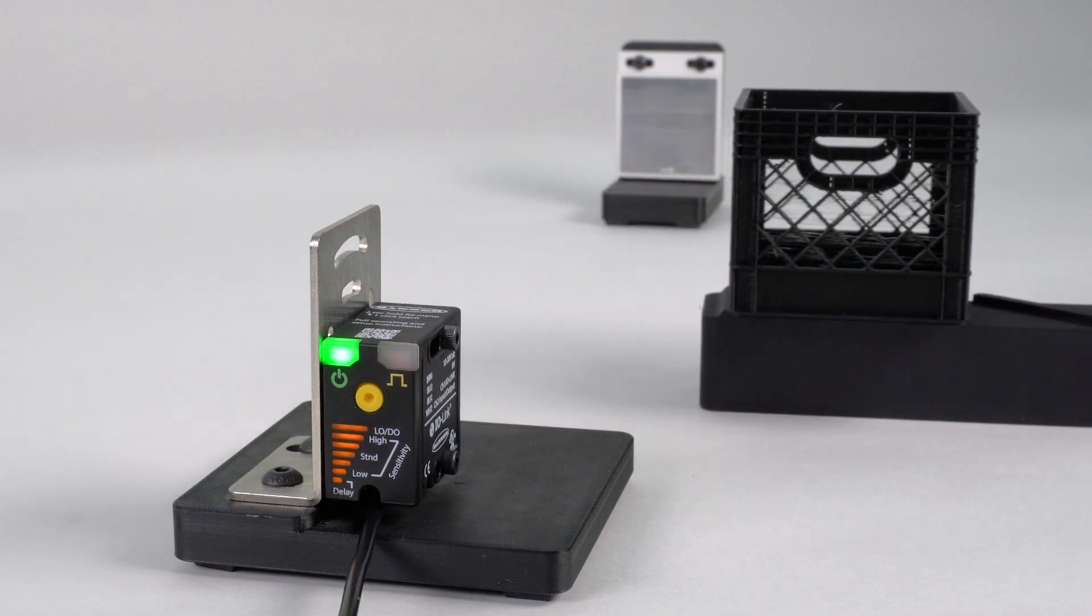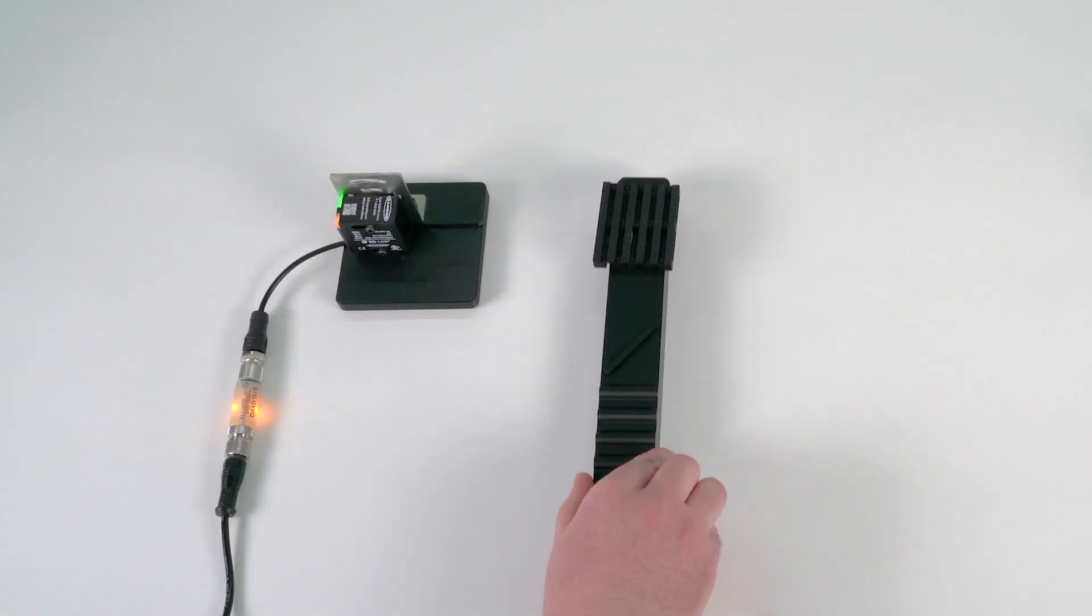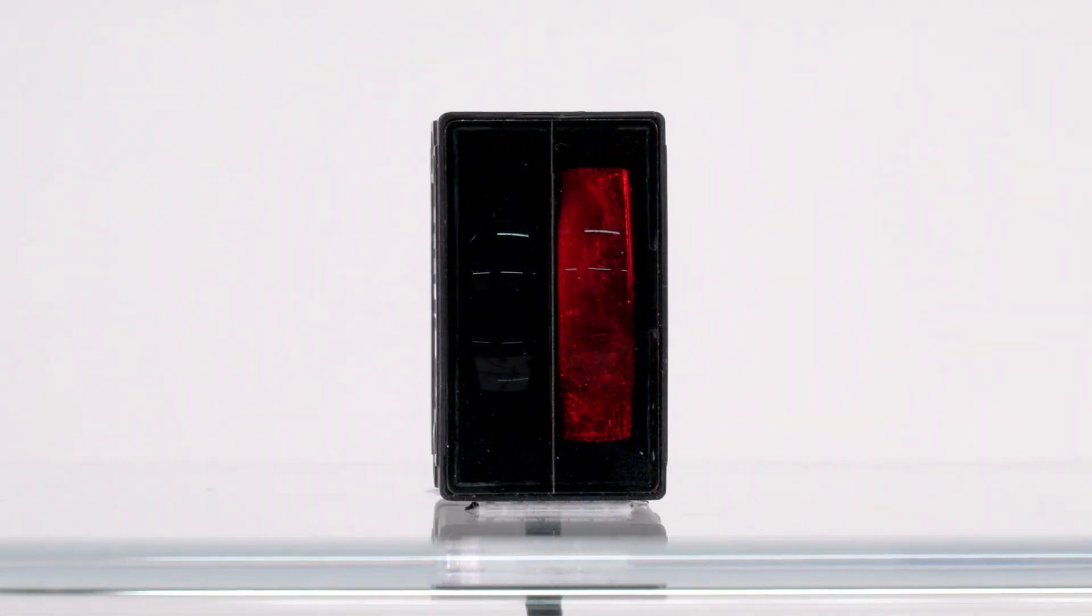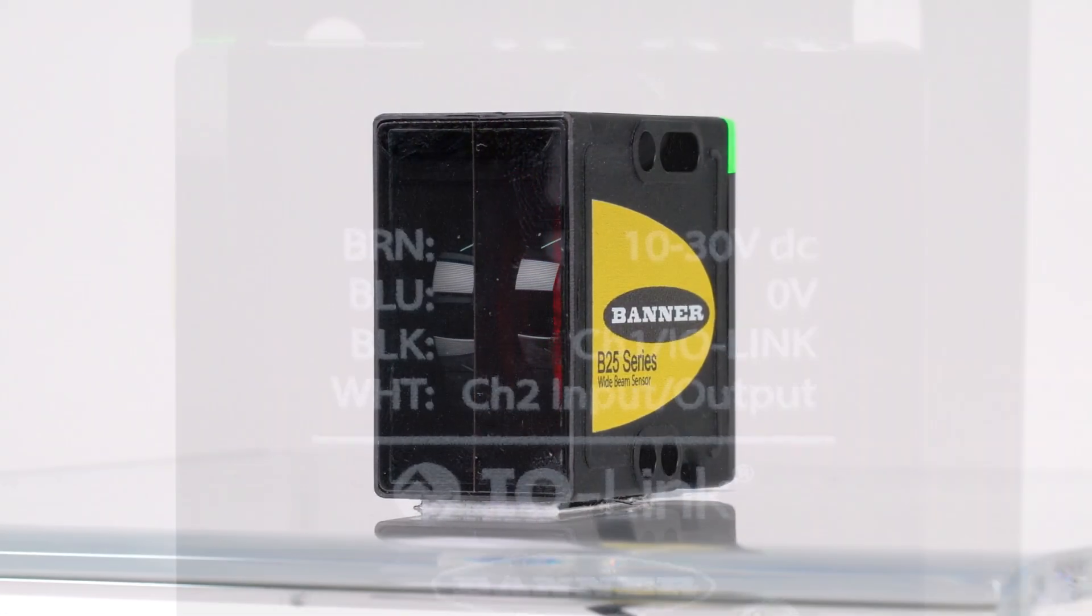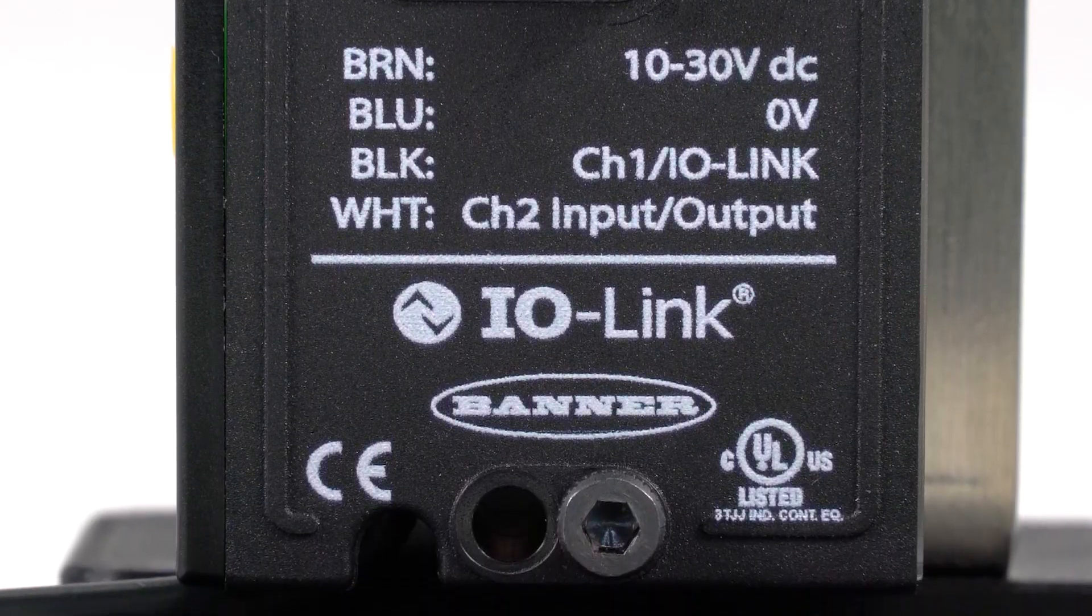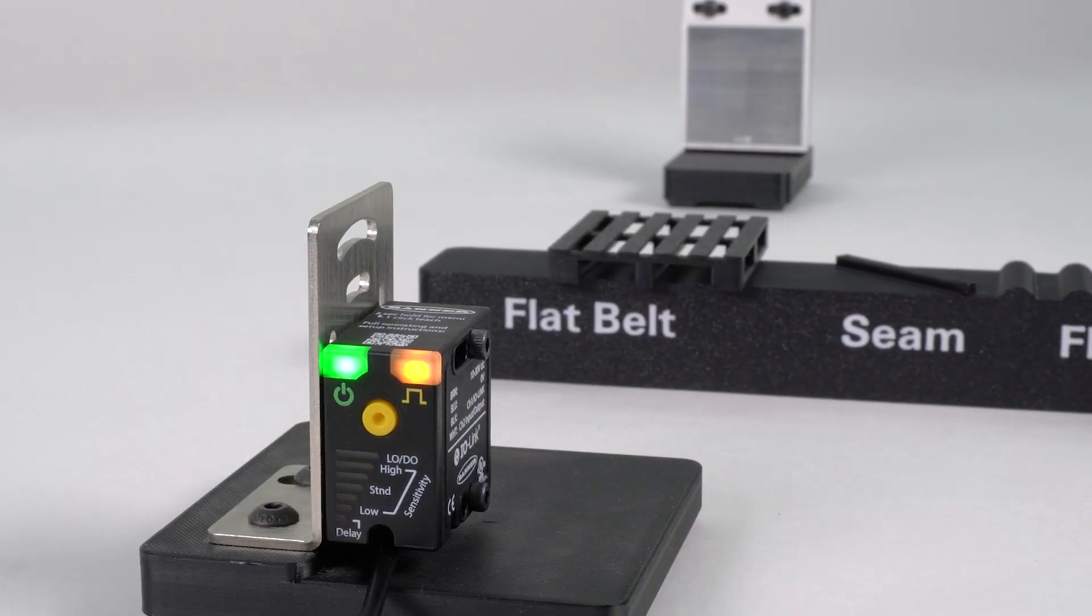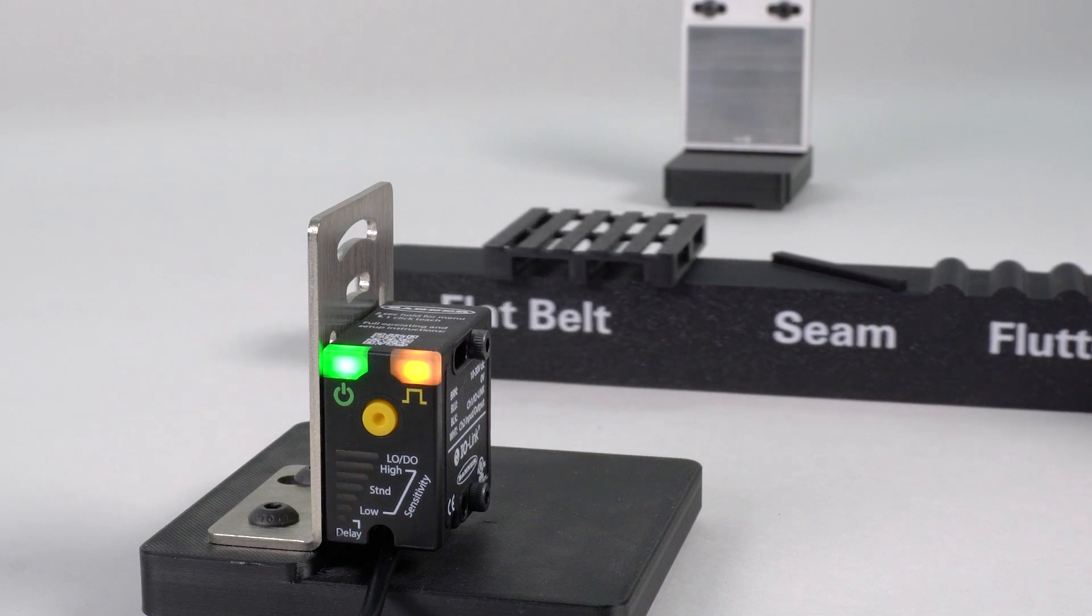This is a quick how-to video that will cover the basics of configuring the B25 Wide Beam Retroreflective Sensor from Banner Engineering. The B25 is designed to detect a wide variety of targets while filtering out common obstructions such as a moving conveyor belt.